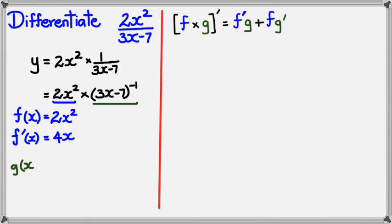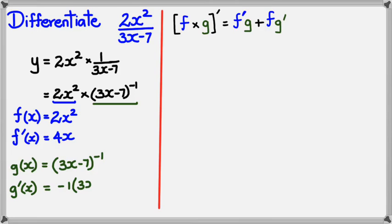The second function is g of x, which is 3x minus 7 to the power of negative 1. Using the chain rule, I'll differentiate it to get negative 1 times 3x minus 7 to the power of negative 2, and that's multiplied by the derivative of the inside of the bracket, which is 3.